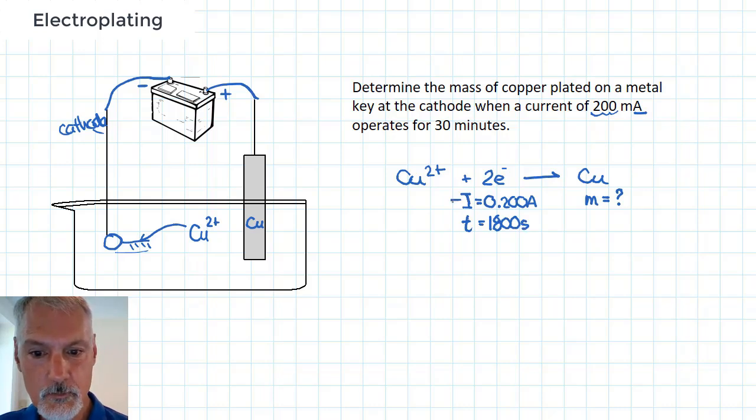From these two quantities, I can determine what's called the quantity of charge. Quantity of charge is the product of these two values. So the quantity of charge, by multiplying these two together, I arrive at 360 coulombs of electric charge have moved. I'm now going to convert that information into moles.